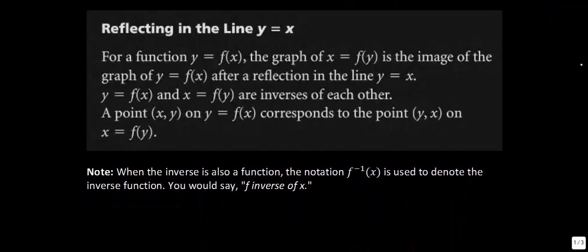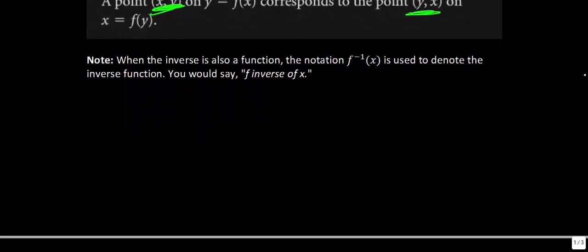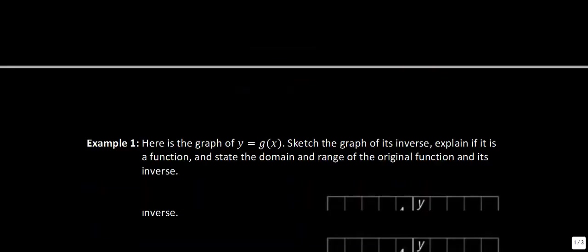In general, we have a rule: when reflecting in the line y equals x, any given point (x, y) is just going to change to (y, x) — we just switch the values. A little note: when the inverse function is also a function, the notation f⁻¹ is used to denote that it's an inverse function, and we say f inverse of x.